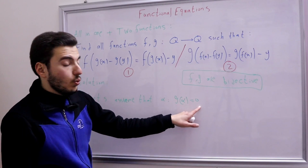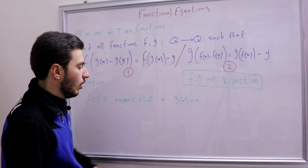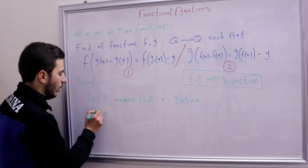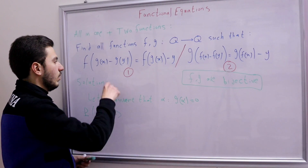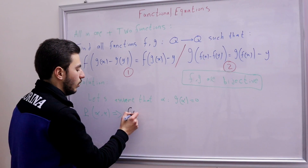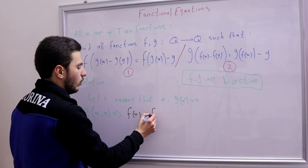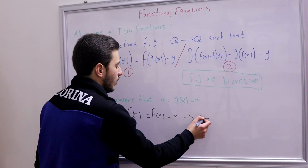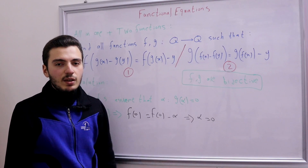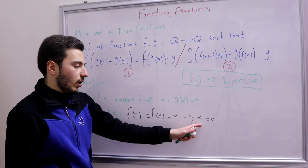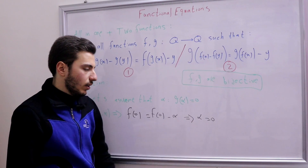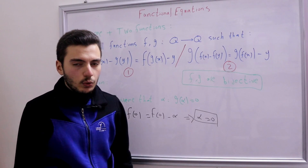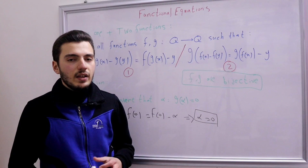We substitute P(α, α). The left-hand side becomes f(0) and the right-hand side becomes f(0) − α. So f(0) = f(0) − α, which means α = 0. The mysterious alpha is simply zero! Therefore g(0) = 0, and by symmetry f(0) = 0.